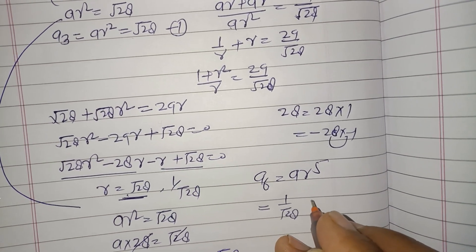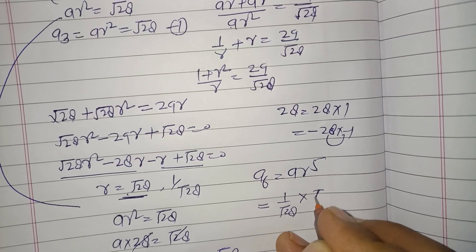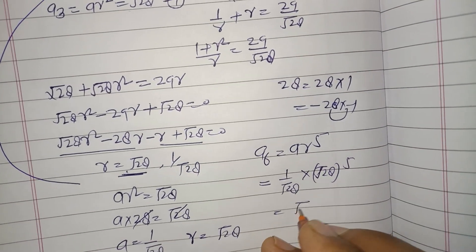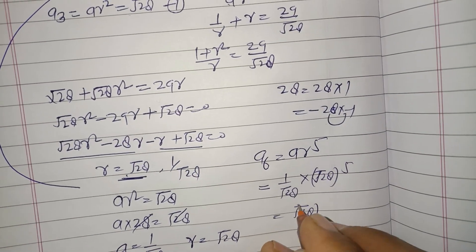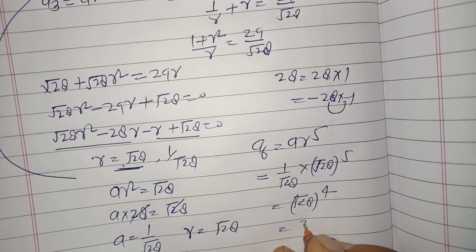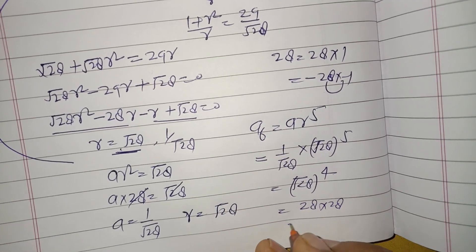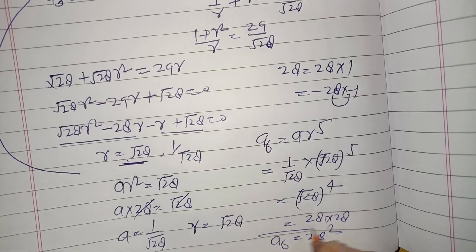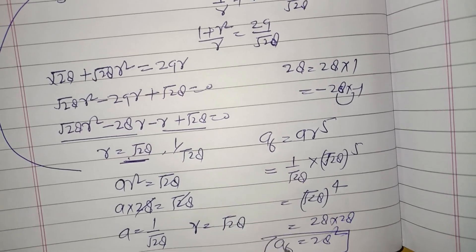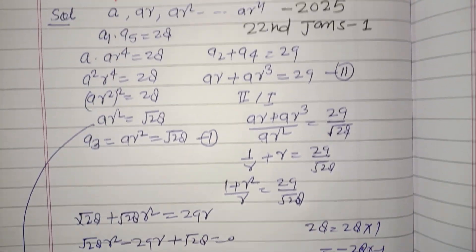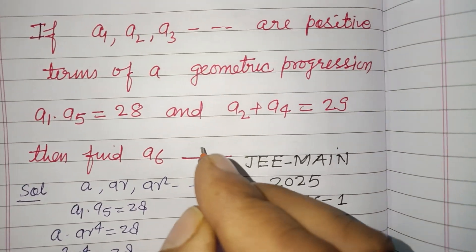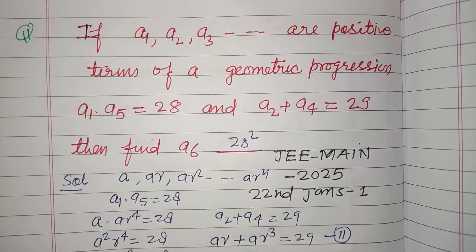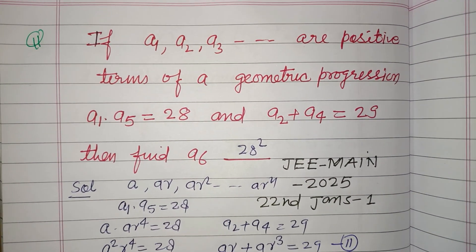Then a6 = a × r⁵. With a = 1/√28 and r = √28: a6 = (1/√28) × (√28)⁵ = (√28)⁴ = 28 × 28 = 28² = 784. So a6 = 28². I hope you got it — please like the video and subscribe to the channel. Thanks for watching.